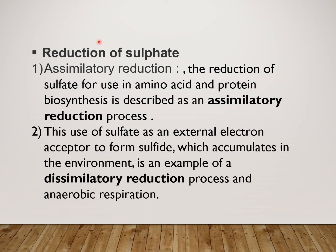The next step of the Sulphur cycle is the reduction of Sulphate. There are two types of reduction: assimilatory reduction and dissimilatory reduction. Assimilatory reduction is the reduction of Sulphate for use in amino acid and protein biosynthesis — whatever Sulphate is available is utilized by the living organism for synthesis of amino acids, and those amino acids are used in protein synthesis.